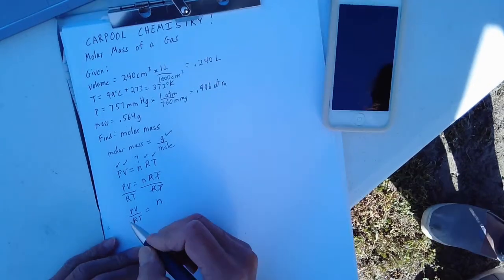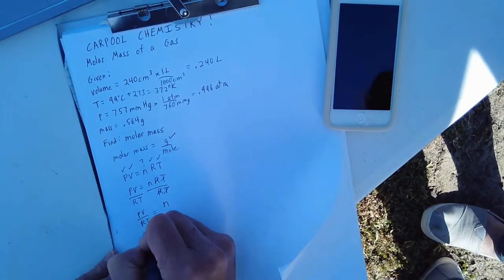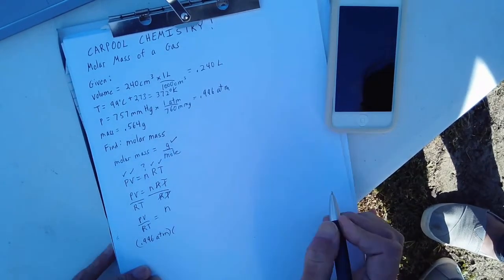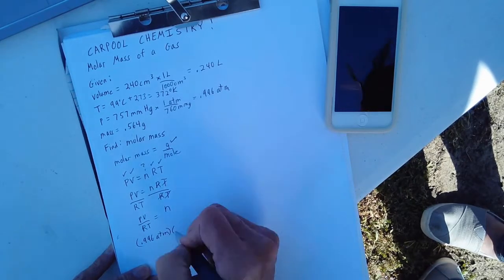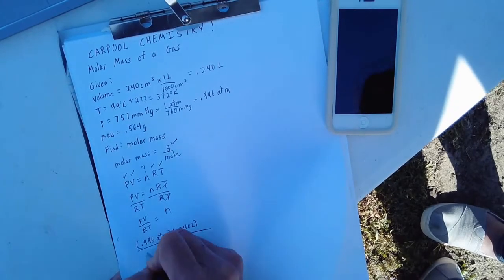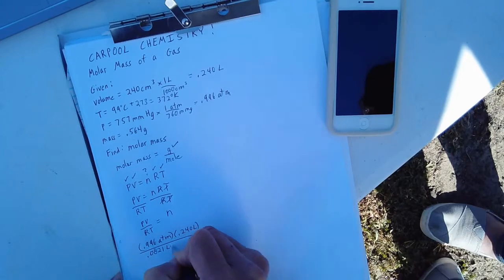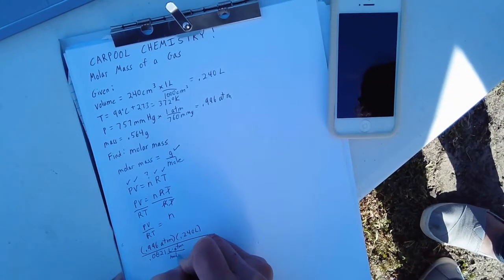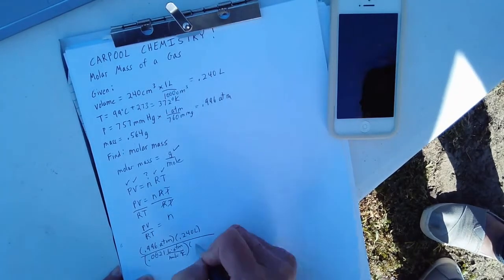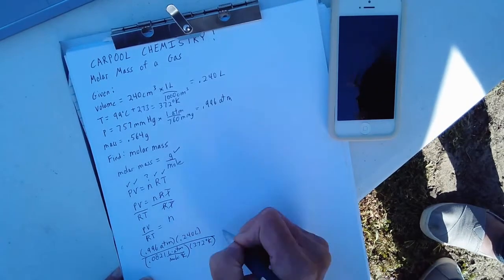And now let's go ahead and substitute in our values. For pressure, we have 0.996 atmospheres. For volume, we have 0.240 liters. The value for R, as we know, is 0.0821 liters atmospheres over mole degrees Kelvin and the temperature is 372 degrees Kelvin. And that's equal to n.